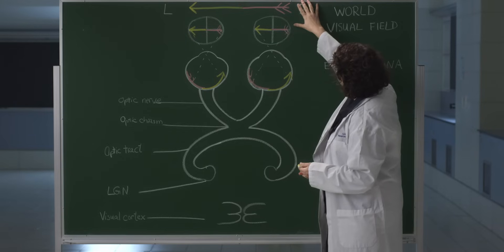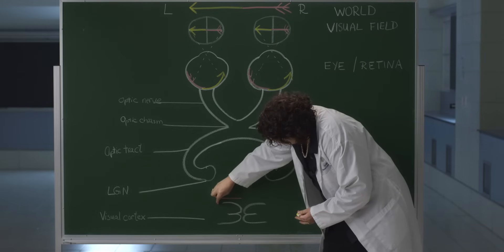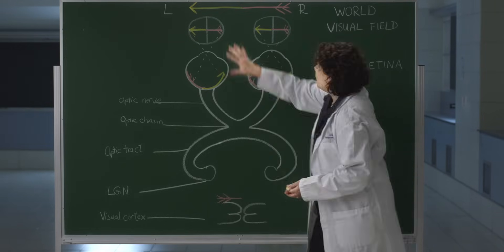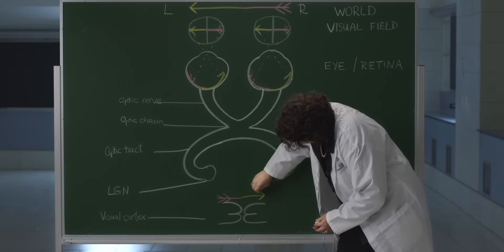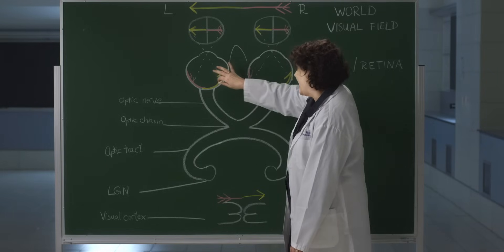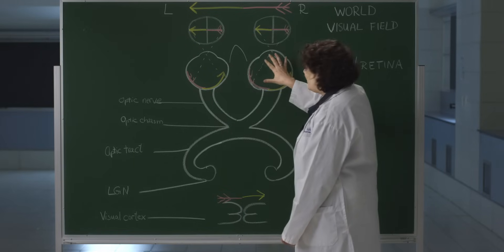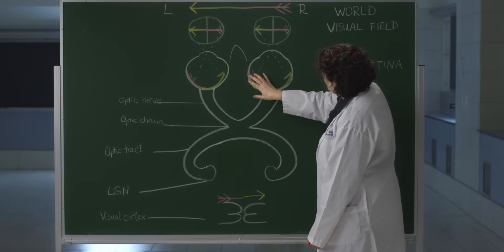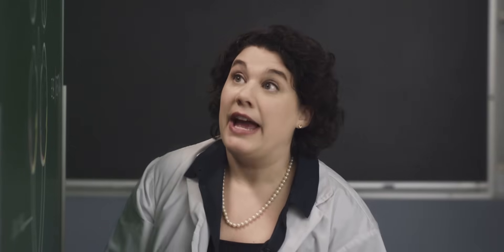But how do we consolidate these two retinal images into one coherent cortical representation? As it turns out, our right visual field projects to the left side of our cortex, and our left visual field projects to the right side of the cortex. We can now describe the retinal fibers as either being nasal, or close to the midline, or temporal, or lateral. The nasal retina represents the temporal visual field. We now need to sort these fibers from the right visual field to the left side of the cortex, and from the left visual field to the right side of the cortex.